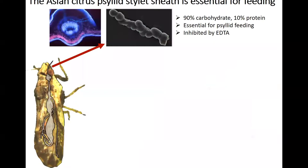During feeding, a sheath polymerizes around the psyllid's stylet, and it's made of salivary secretions. Here, if we use an electron micrograph, we can view the sheath, and you'll see that it forms all the way around the mouthpart and has this globular structure.